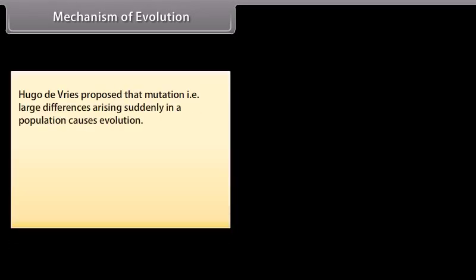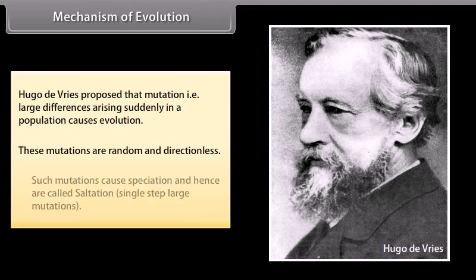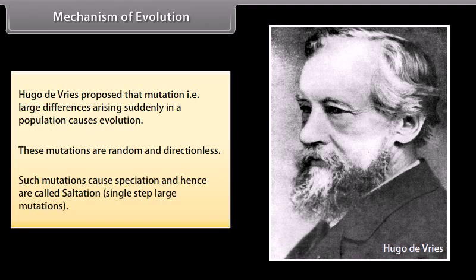Hugo de Vries proposed the mutation theory — that large differences arising suddenly in a population cause evolution. These mutations are random and directionless. Such mutations cause speciation and are called saltation, that is, single-step large mutations.